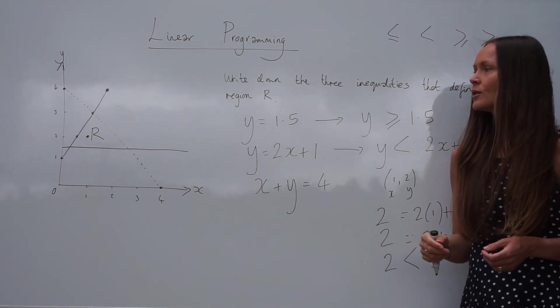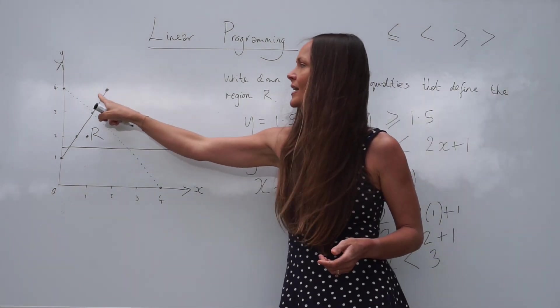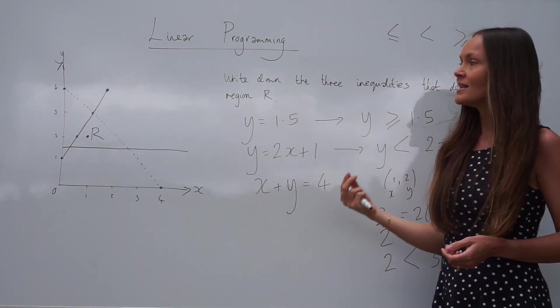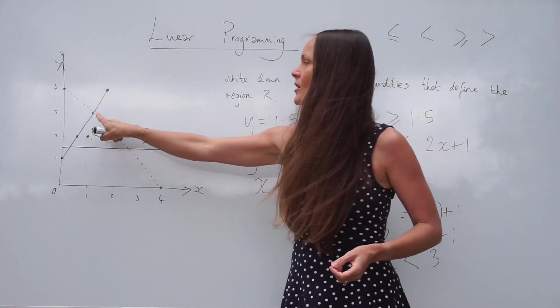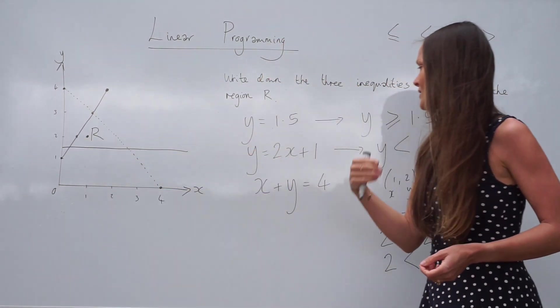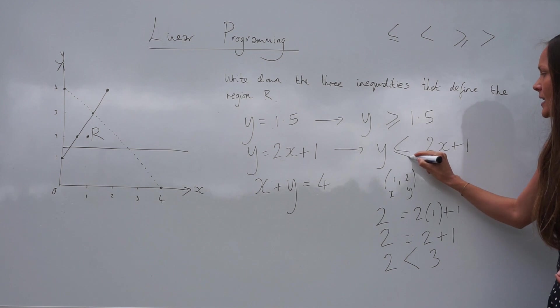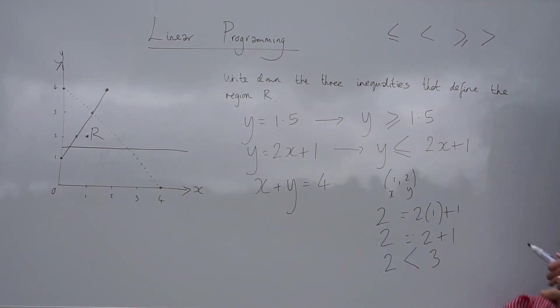And just like in the first one, it's another solid line. It's not dashed. So that means the region R could also lie upon that line. And so you need to include the equal sign in the inequality.